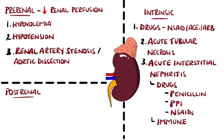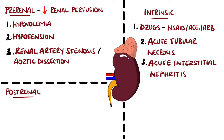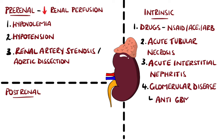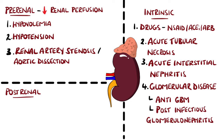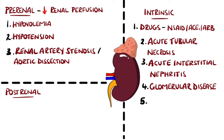Another cause of intrinsic AKI includes glomerular diseases like anti-glomerular basement membrane disease, also known as Goodpasture's disease, or post-infection glomerulonephritis. Vascular conditions like thrombosis or embolic events can also cause intrinsic AKI.